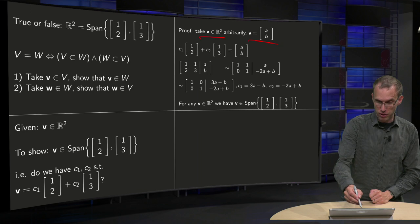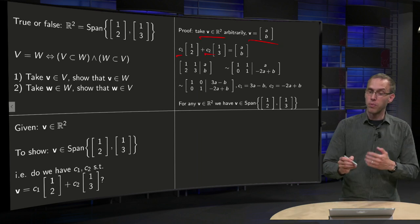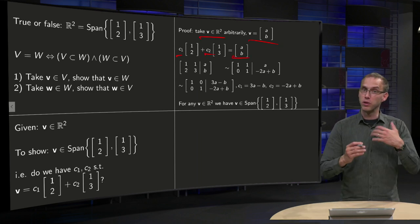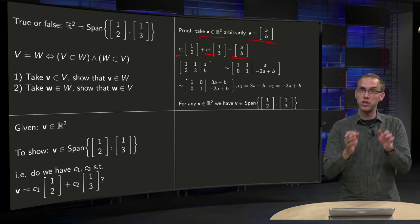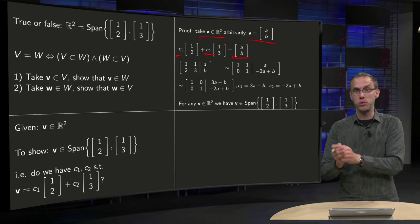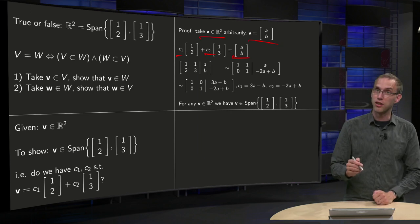Then we have to find scalars C1 and C2. We have to see whether this [a,b] is the linear combination of [1,2] and [1,3]. So we have to find the weights C1 and C2 such that C1 times [1,2] plus C2 times [1,3] is exactly this vector [a,b].